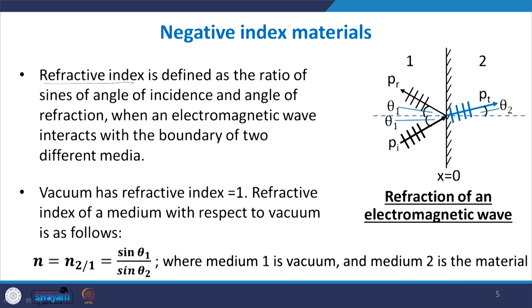Refractive index is defined as the ratio of the sine of the angle of incidence to the sine of the angle of refraction when an electromagnetic wave interacts with the boundary of two different media. In this figure, medium 1 and medium 2 interact at the boundary; theta 1 is the angle of incidence and theta 2 is the angle of refraction. The refractive index of medium 2 with respect to medium 1 is sin θ₁ / sin θ₂. Most often there is an absolute refractive index where medium 1 is taken as vacuum, with refractive index of 1.